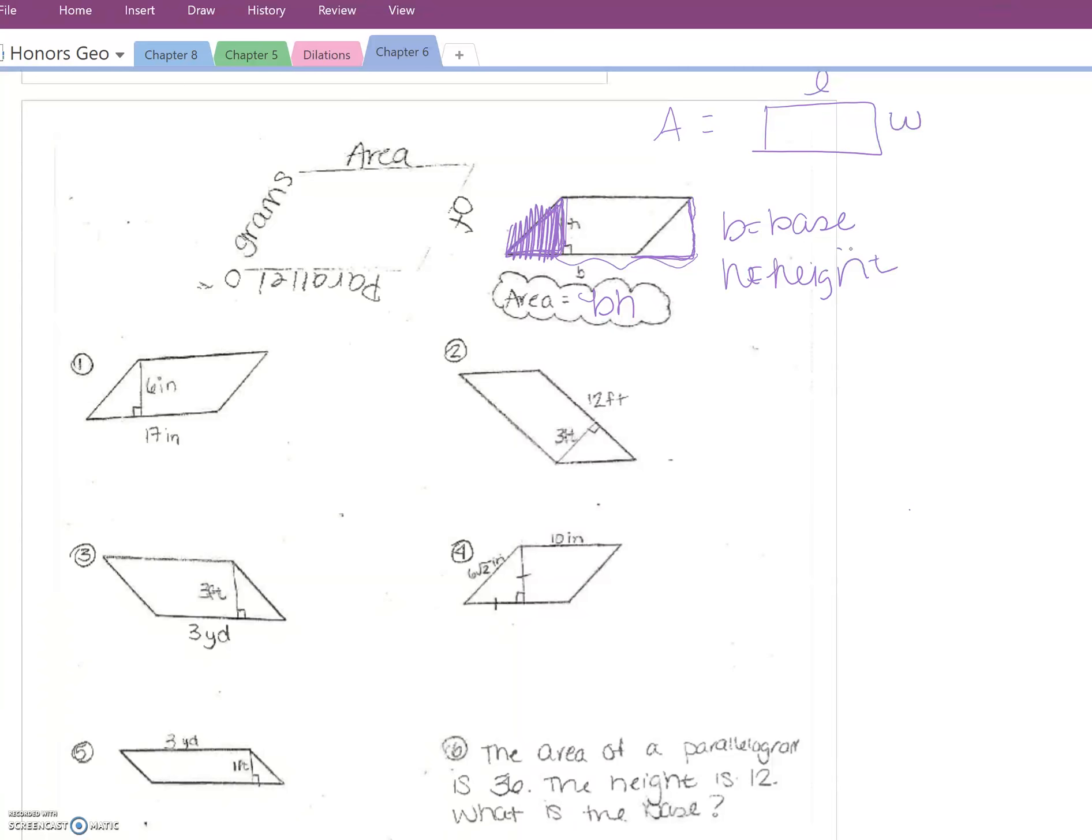So look at number one. In order to find the area of this parallelogram I would just multiply 6 times 17, which is 102.